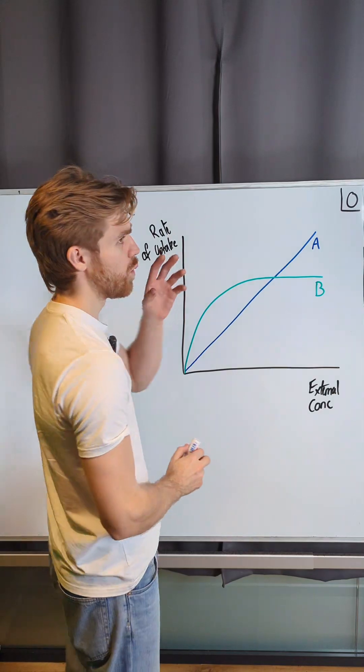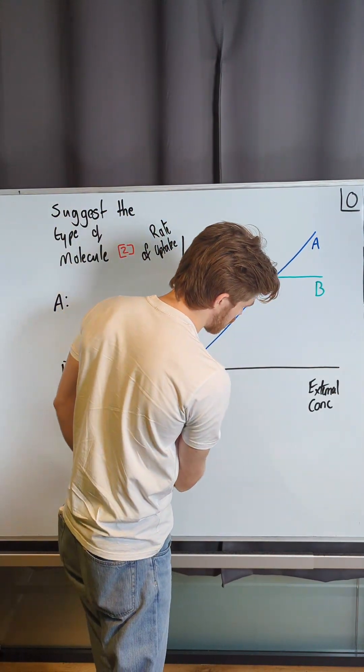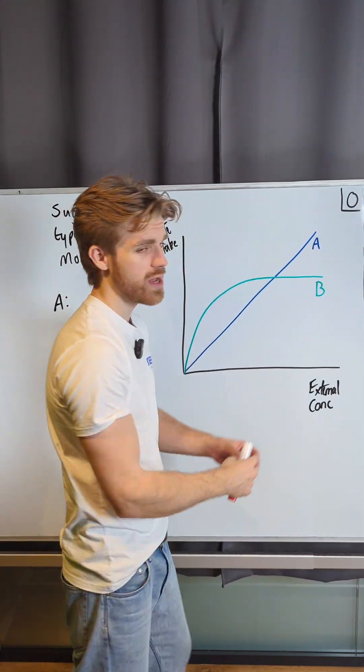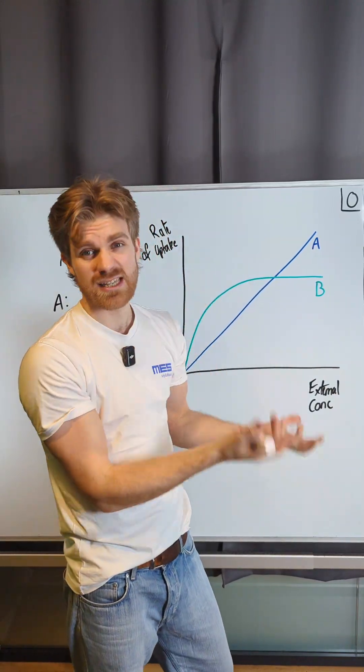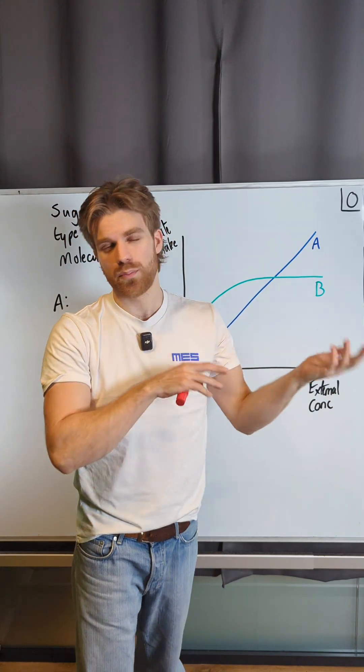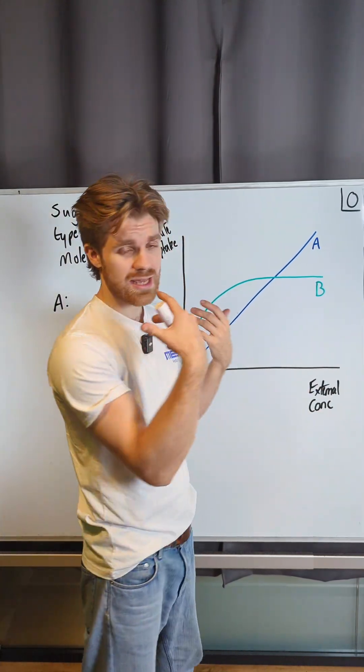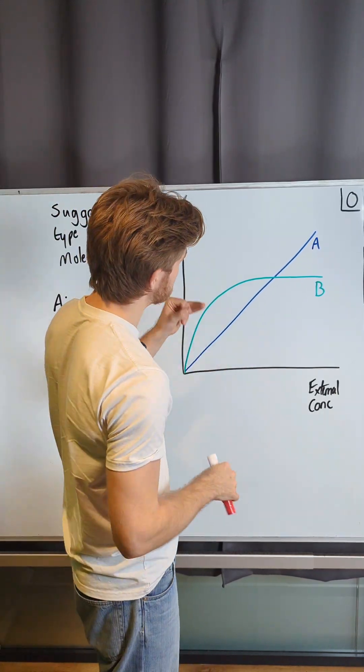If we're talking rate of uptake, we're probably talking about diffusion or active transport. If external concentration is increasing and the rate of uptake is increasing, then we have an increasing concentration gradient, so we're probably talking about facilitated diffusion or simple diffusion, not active transport. So we've got two molecules that are either moving by simple diffusion or facilitated diffusion. How do we identify which one is which?